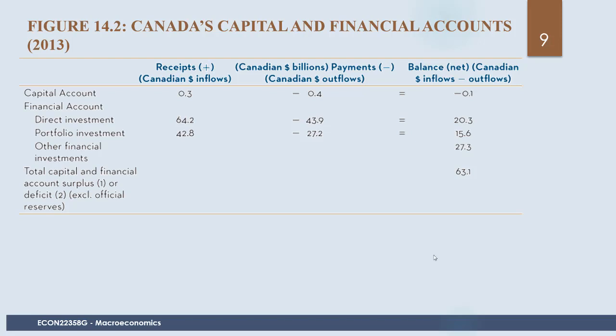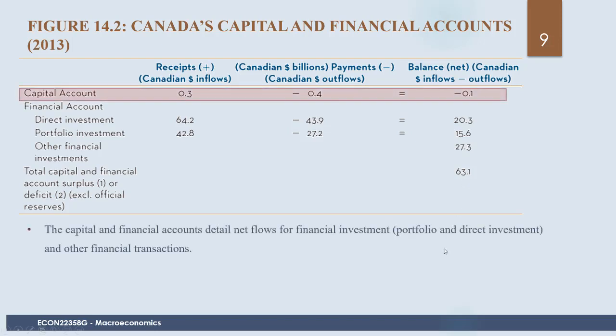If someone lends us money, they are buying a Canadian bond. When a foreigner buys a Canadian savings bond or corporate bond, they're putting money into Canada and owning that asset. So if we have a negative current account, we should see surpluses or a positive capital account. Looking at Canada in 2013, direct investment, portfolio investment, and other financial investments combined show that receipts exceed payments, giving an overall positive balance of $63.1 billion.